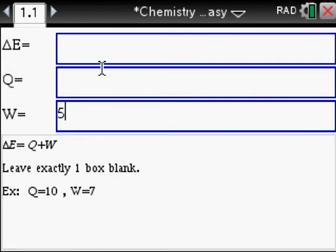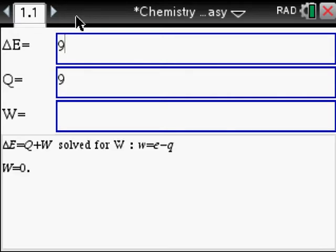Let's find work now. Work is going to be 9. Oh no, we want to find work. So Q is going to be 9. And let's make change of energy 9 too. So original equation, modified equation, answer, done.